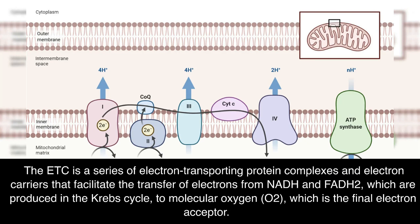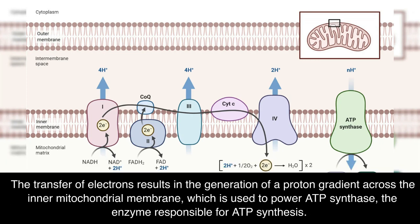The ETC is a series of electron-transporting protein complexes and electron carriers that facilitate the transfer of electrons from NADH and FADH2, which are produced in the Krebs cycle, to molecular oxygen, O2, which is the final electron acceptor. The transfer of electrons results in the generation of a proton gradient across the inner mitochondrial membrane, which is used to power ATP synthase, the enzyme responsible for ATP synthesis.